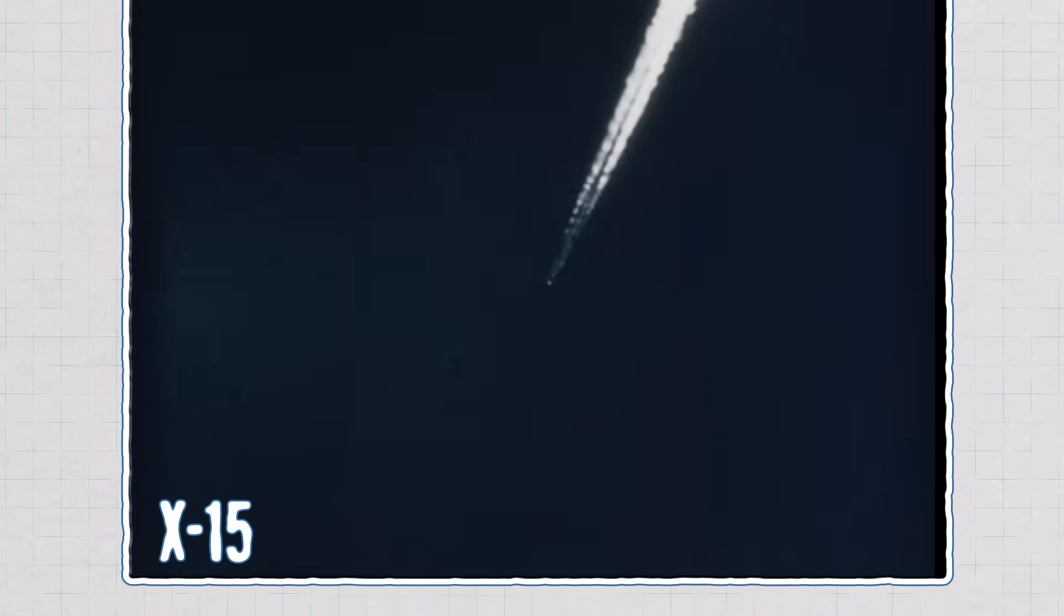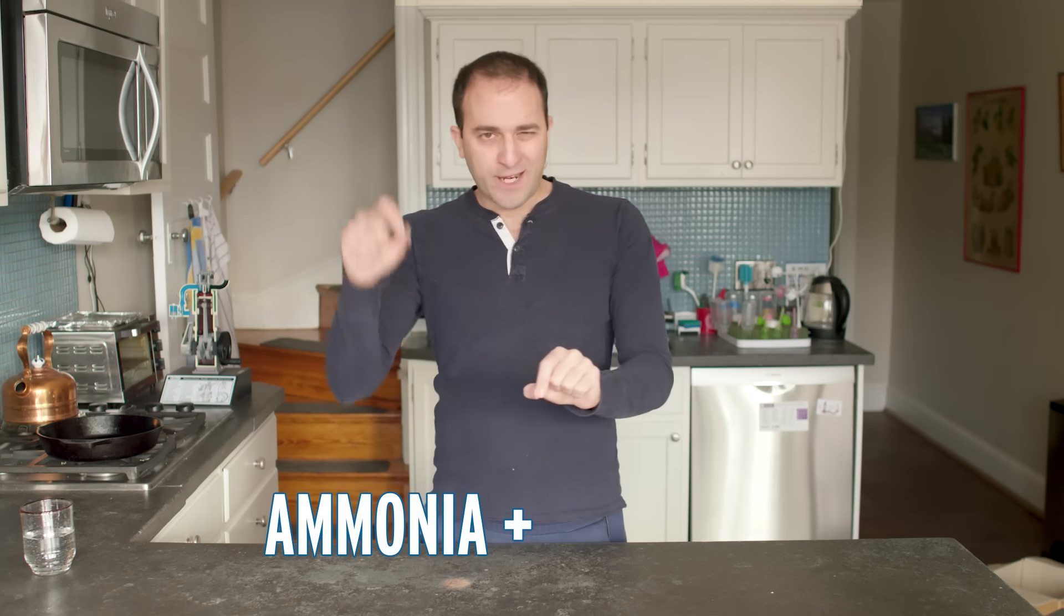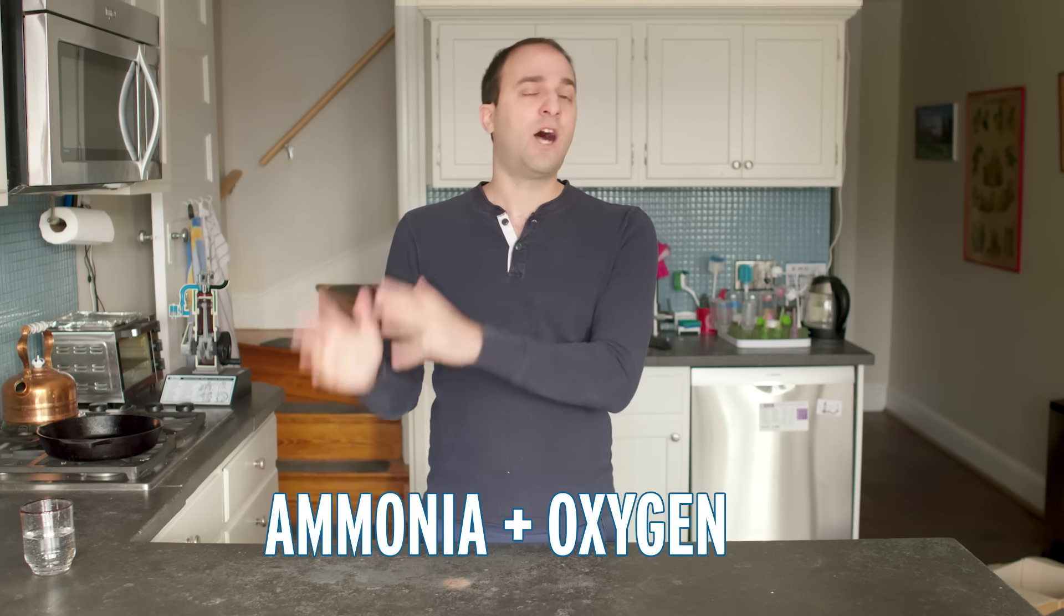...which is a plane developed by NASA in the 1950s, and basically it consists of a rocket engine with two wings and a cockpit. Now that rocket engine was powered by ammonia and a promoter, in this case oxygen.